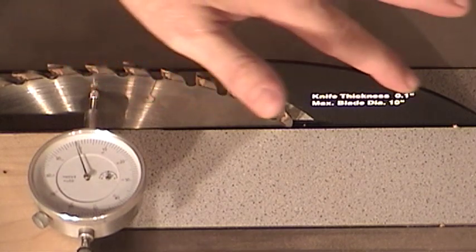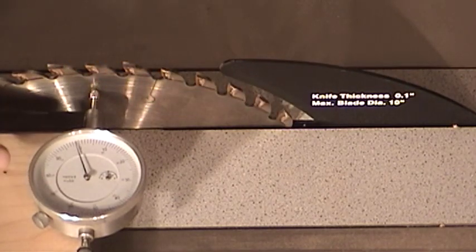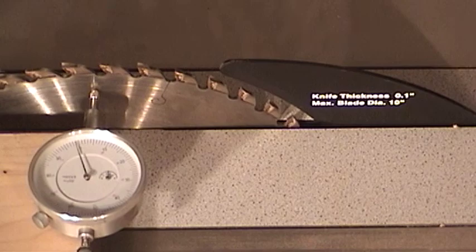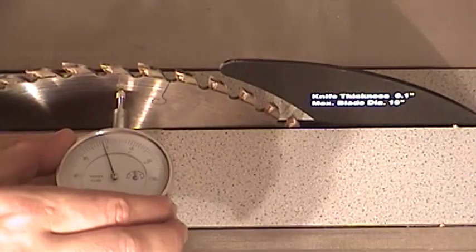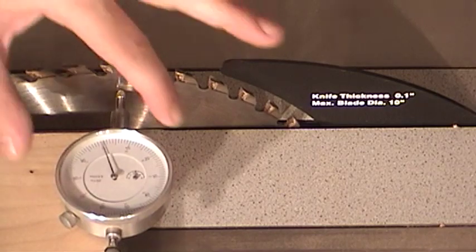So the first step in the process in checking the alignment of your riving knife is to zero your dial indicator on your table saw blade. So I went ahead and zeroed the face of my dial indicator to zero.